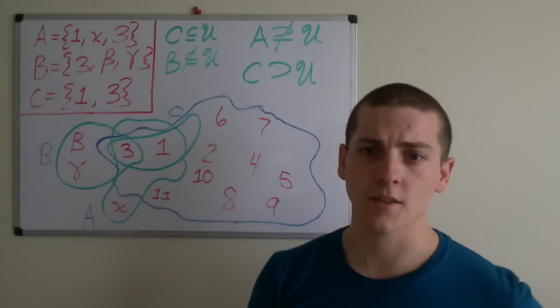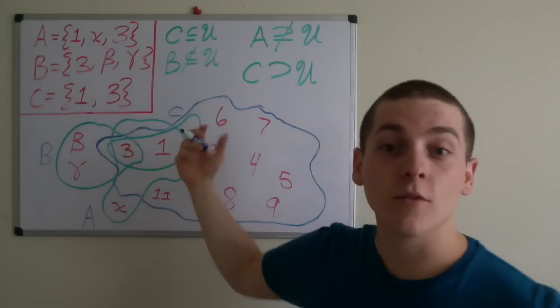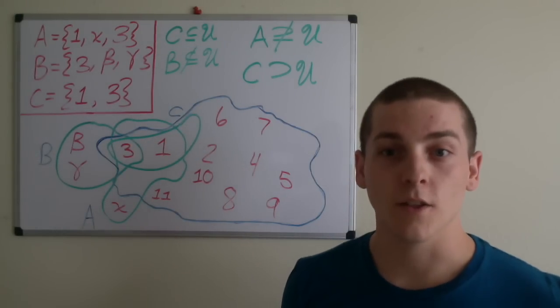Now what can be said about these sets? Well we can say that C is a subset of the universe because all elements of C are elements of the universe.